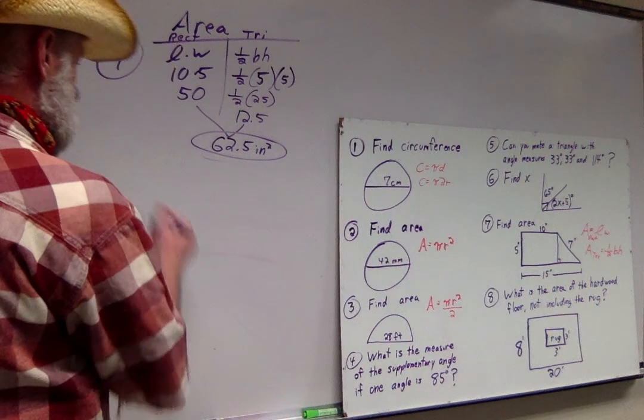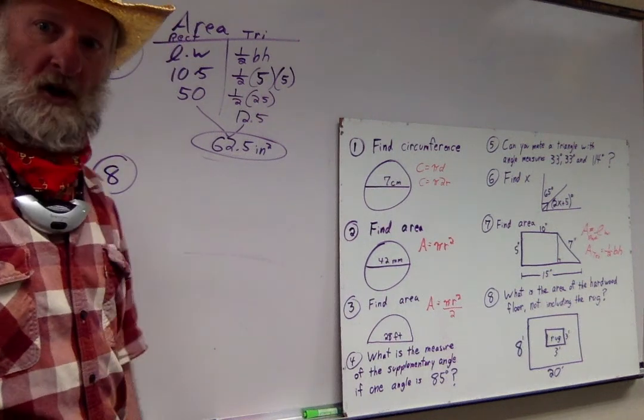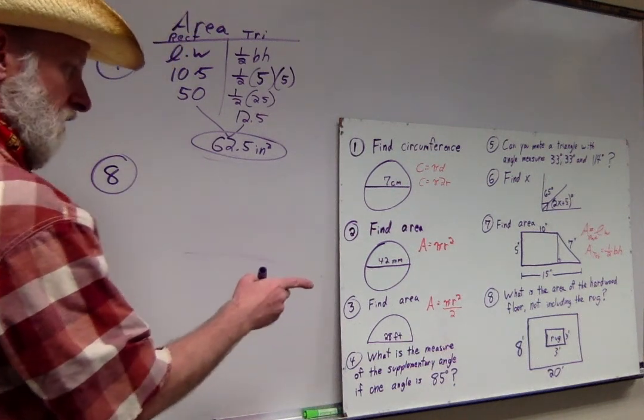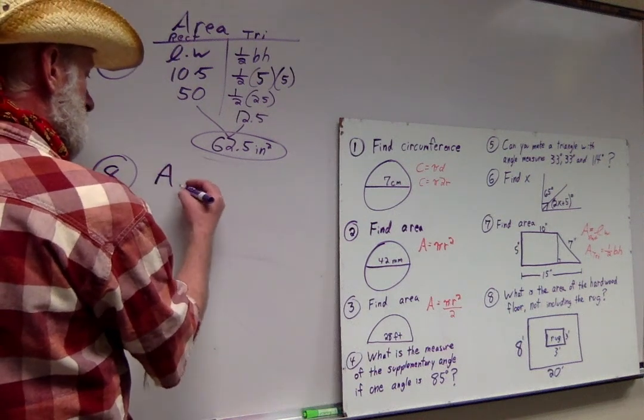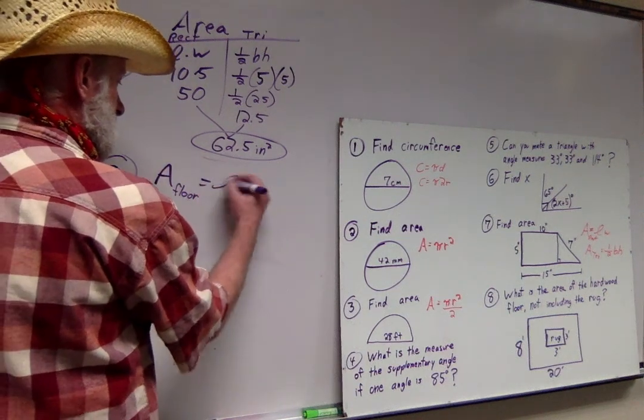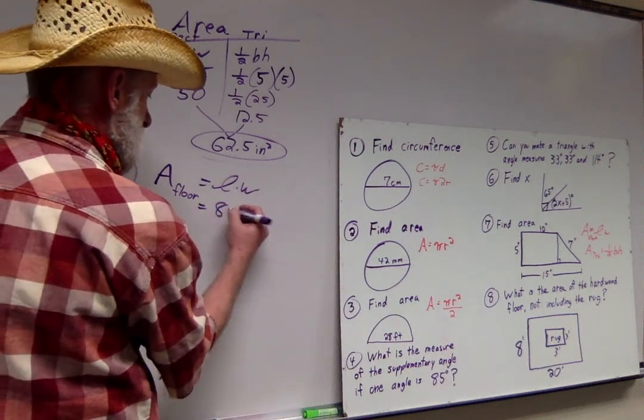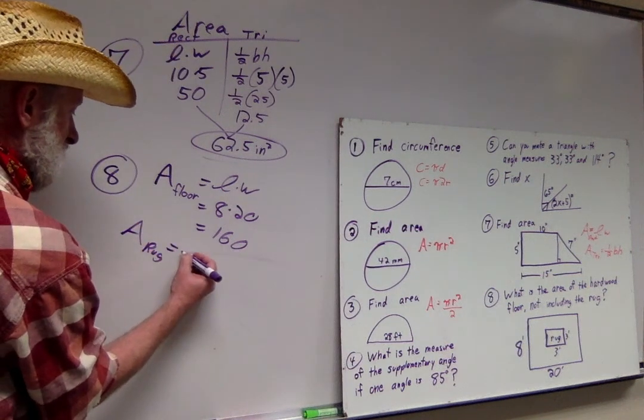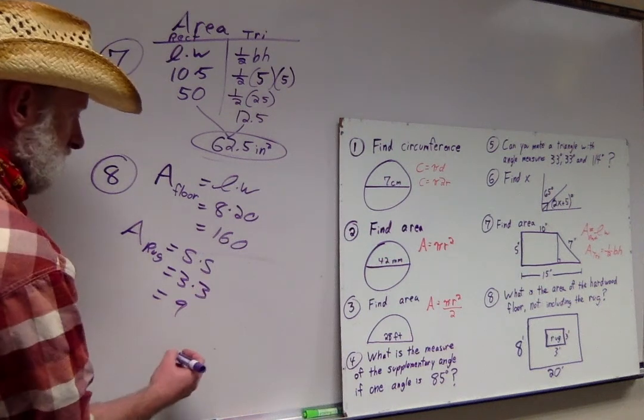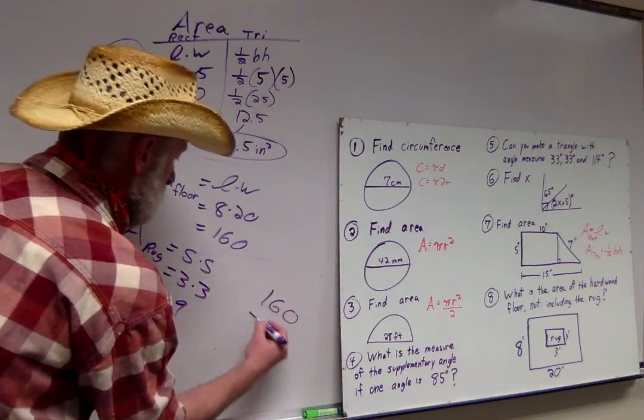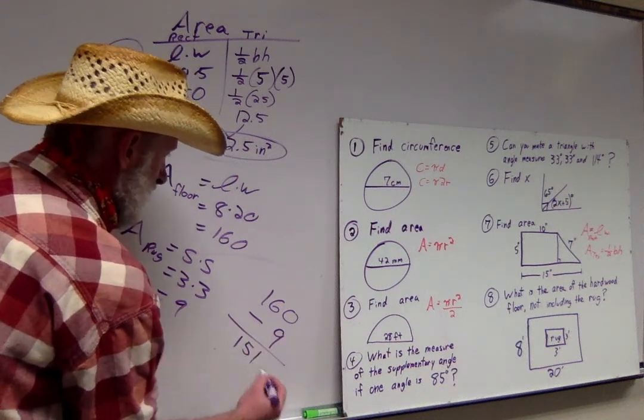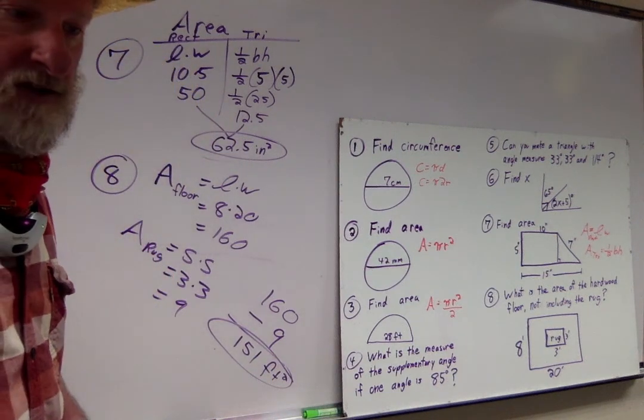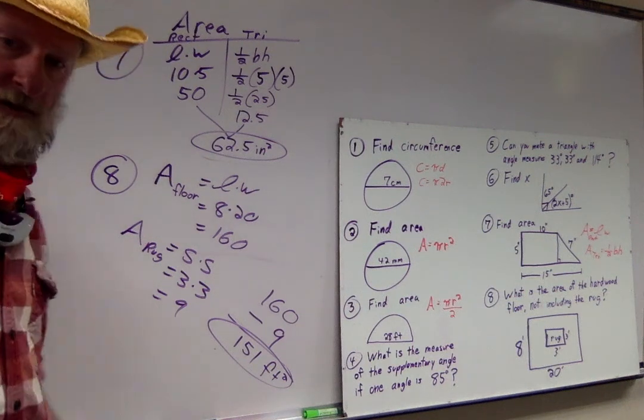Number 8. To find the answer to this one, we're going to find the area of the floor first. That's a rectangle, length times width. That was 8 times 20, that's 160. Let's also find the area of that rug, which is a square. 3 times 3 is 9. If I take that 160, subtract what you don't have to mop, you should get 151 feet squared.